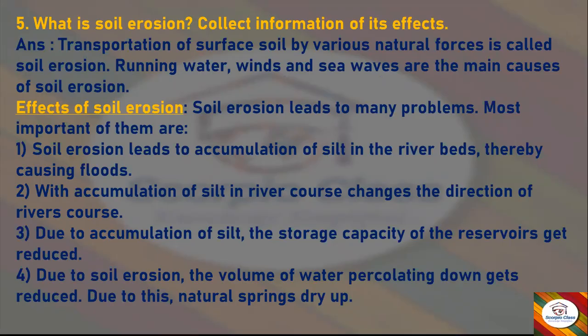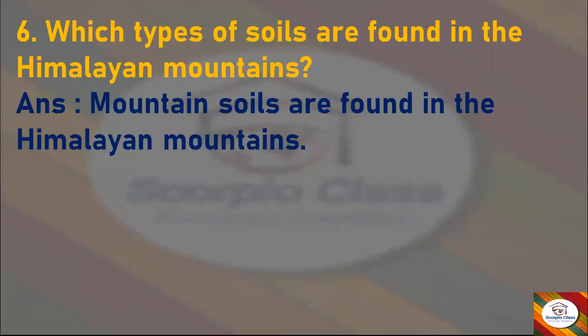Effects of soil erosion: Soil erosion leads to many problems. Most importantly, soil erosion leads to accumulation of silt in river beds, thereby causing floods. Accumulation of silt in river courses changes the direction of river flow. The storage capacity of reservoirs gets reduced due to silt accumulation. Due to soil erosion, the volume of water percolating down gets reduced, causing natural springs to dry up.